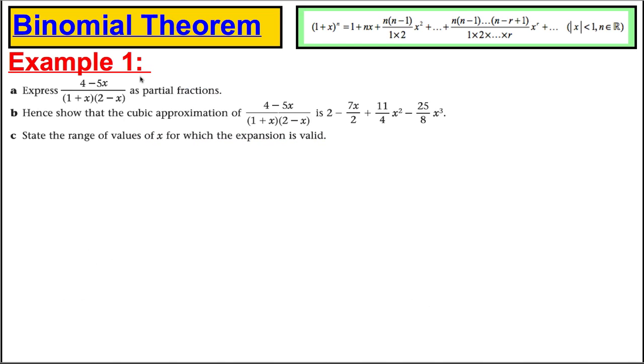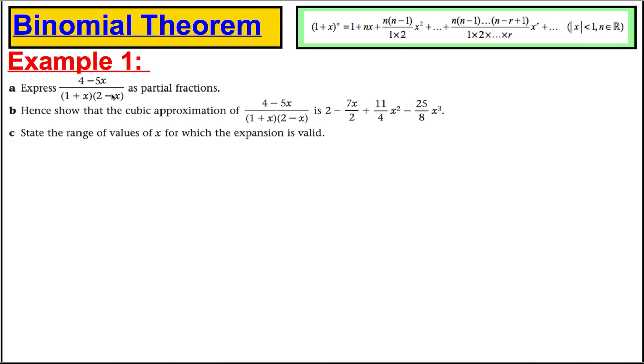Let's look at an example. Before we start, just to explain the idea of these questions. Always, in the early part, part A, they'll give you an algebraic fraction. You'll be asked to express it in partial fractions using your knowledge of chapter 1. Then, with those decomposed fractions, you can use the Binomial Theorem on each of the parts to expand them into polynomials with x's, x squareds, x cubed, etc. You can combine those numbers and get a polynomial that is an approximation for that fraction. And lastly, you always have to state where they're valid.